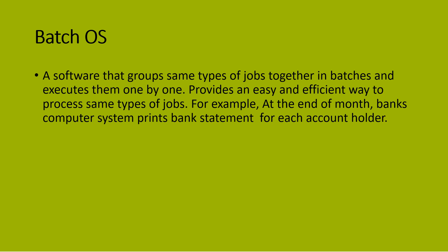So what is a batch operating system? It means that jobs of the same type are grouped together. Like the bank statement example — printing all statements is one type of job assigned to one computer. Just like students in a 2020-21 batch all follow the same course, same classes, and same teachers — the whole system runs the same way for all of them.